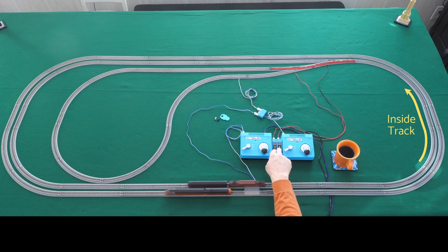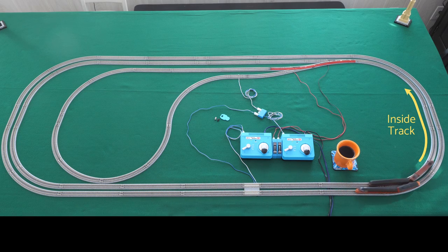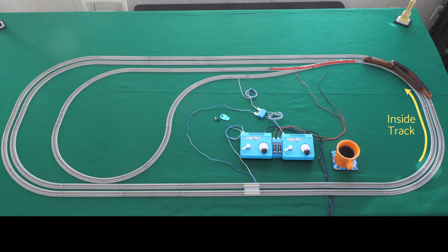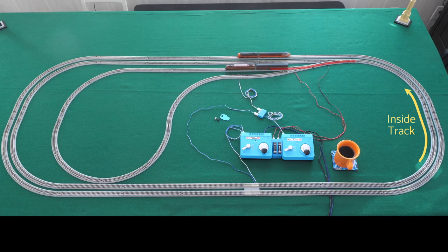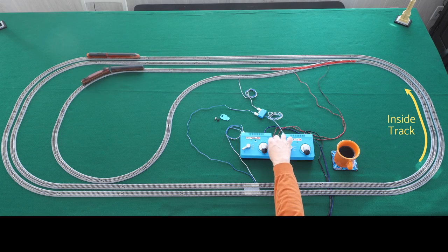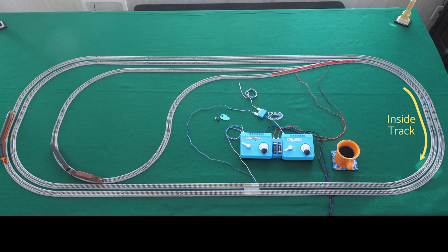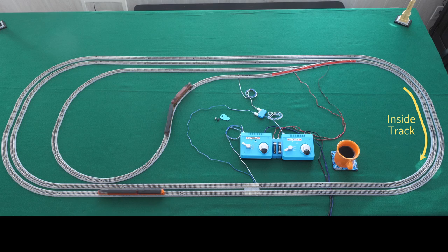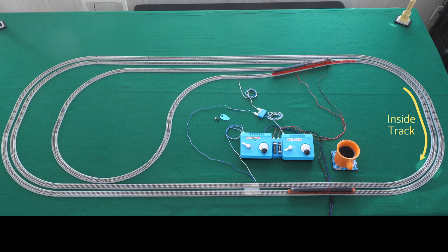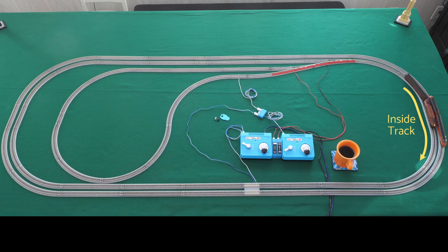A reverse loop is a special kind of turnout that permits you to reverse the direction of your train. Your train pulls off into the loop going in one direction. By the time it gets around to complete the loop, it comes back onto the same track but going in the opposite direction.